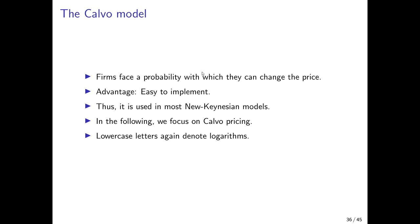Third, we have the Calvo model, or Calvo pricing. In this case, firms face a certain probability with which they can adjust their price in a given period — they receive a signal whether or not they can adjust. This also leads to a sluggish price adjustment mechanism, and the advantage is that it is very easy to implement — much easier than the two previous versions discussed. This is basically why it is used in most new Keynesian models. In the following, we will talk about the Calvo model in more detail.